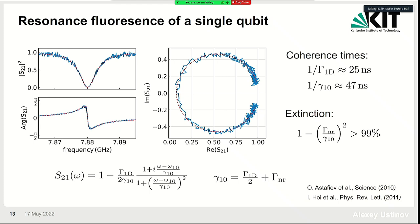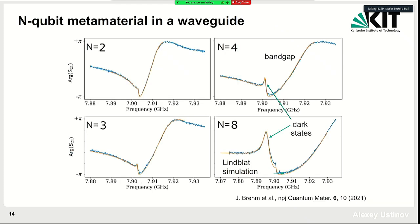This single-qubit behavior is characterized by the extinction ratio — the ratio of full transmission to transmission at the qubit frequency — which in our case is about 99%. The qubit is very strongly coupled to the one-dimensional waveguide, with T1 radiation-limited at about 25 nanoseconds, and the estimated T2 dephasing time from the circle fit is about twice that value.